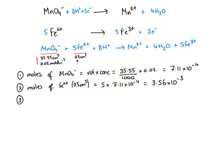The solution we made up was 250 cm³, so we want to find out how many moles of Fe²⁺ we had in that 250 cm³. To do that, I just need to multiply the moles from the previous step by a factor of 10.